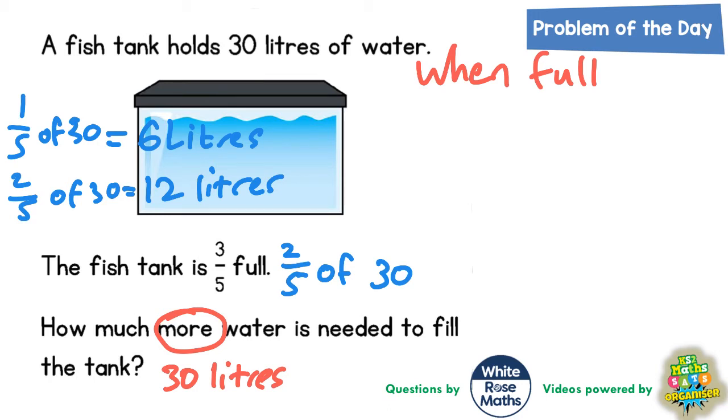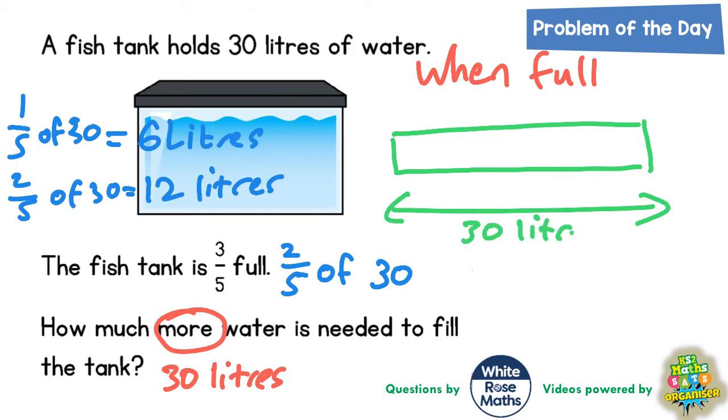Now the other way we could do this, and hopefully also get an answer of 12 liters, is by drawing a bar model. So if we draw a bar model, then the whole bar is going to be the whole fish tank, which would be 30 liters. But we're splitting this into fifths, so we'd have to split our bar into five pieces like so.